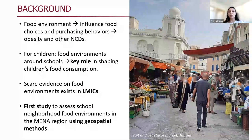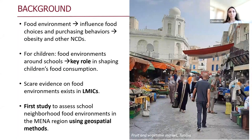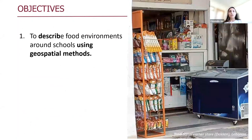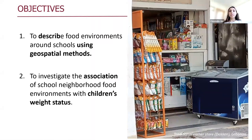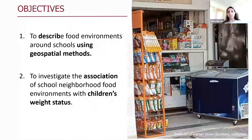It's also the first study to look at the association between food environment and children's weight status in this region. The objectives of this study are twofold: first, to describe the food environment around schools using geospatial methods; and second, to investigate whether there is an association between school neighborhood food environment and children's weight status.